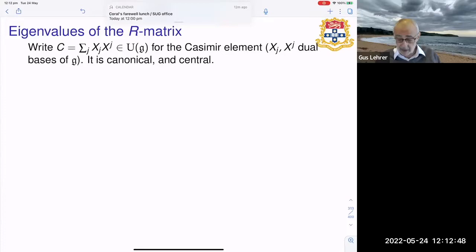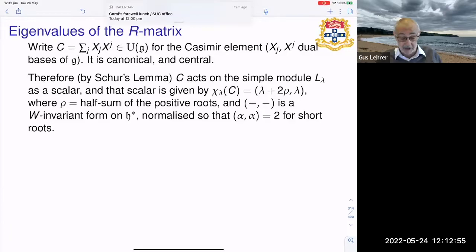So in certain cases we can understand the action of the R matrix on V tensor V generically. So what do we mean by that? The Casimir element is a central element of the universal enveloping algebra. x_j, x^j upper and lower are dual basis with respect to the canonical Killing form on the Lie algebra and its universal enveloping algebra. This element being central, Schur's lemma operates on L_lambda as a scalar, and that scalar is very well known. It's a classical thing which I think was probably known already to Casimir. It's given by this inner product. There is an inner product on P, in fact on the root lattice, and rho is the half sum of the positive roots. And this is a W invariant form on H*, and it's normalized so that its value is 2 for short roots. So this applies even when the roots have different lengths.